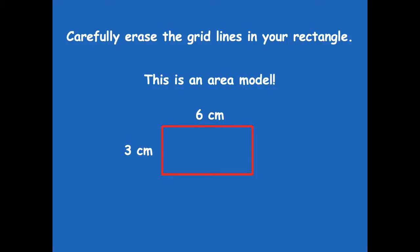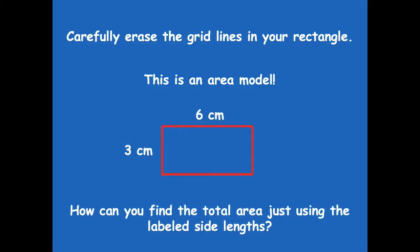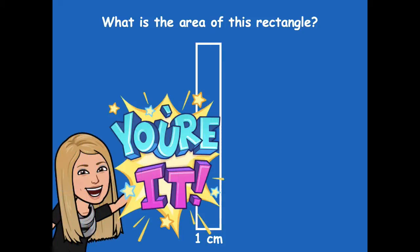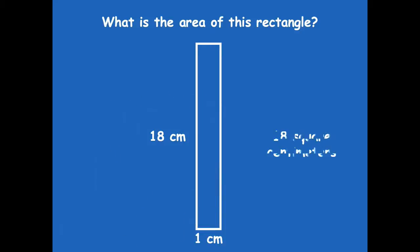This is an area model. We talked in the beginning about our I can statement: I can interpret the area of an area model to use rectangular arrays. Here's our rectangular array — we had those squares in there, we erased those, and now we're left with just a plain old rectangle, which is also known as an area model. We have our two sides labeled. So how can we find the total area just using the labeled side lengths? We just multiply those two side lengths — so 3 times 6, which gives us 18. For this area model, 18 times 1 is 18 square centimeters.